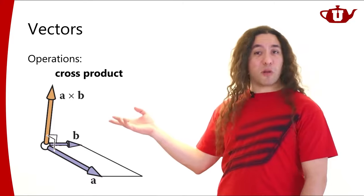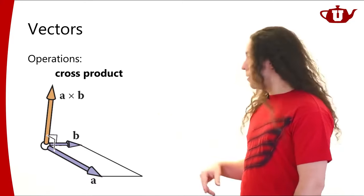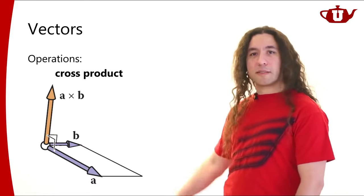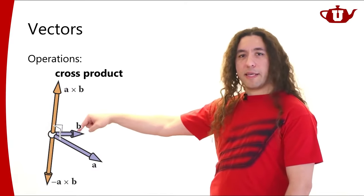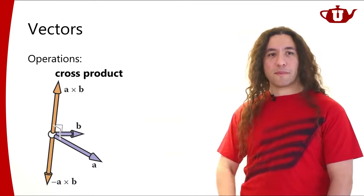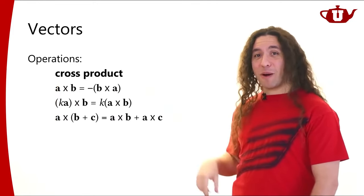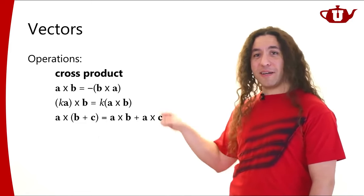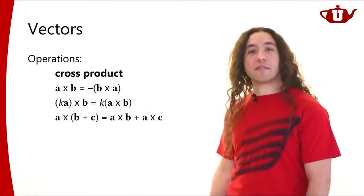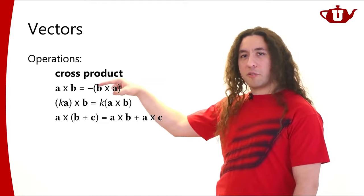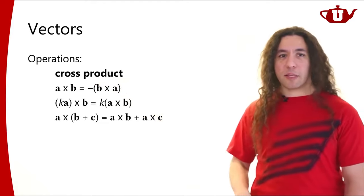Another kind of product we need to be familiar with is the cross product. A cross B, using the right-hand rule, gives a direction in 3D. The opposite is minus A cross B. If you swap the order of vectors in a cross product, you get the opposite direction, so you need to add a minus sign if you switch the order.